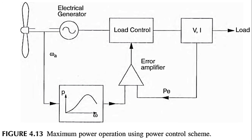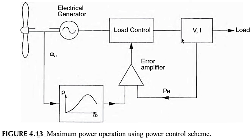This is a basic illustration of the maximum power operation using the power control scheme. This scheme uses a closed-loop negative feedback function, which will always lead to stability. The actual wind speed drives the power-versus-speed curve used to calculate the error signal using negative feedback of voltage and current measured from the actual load.